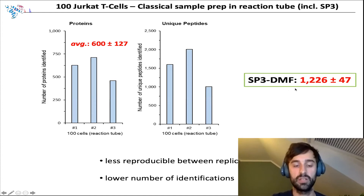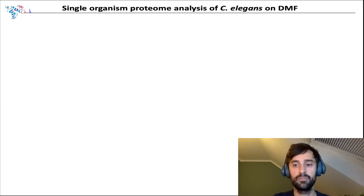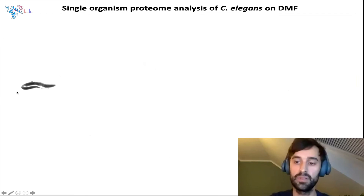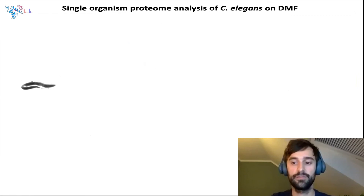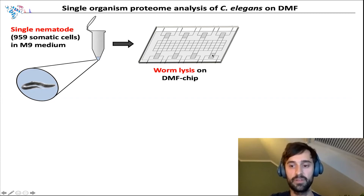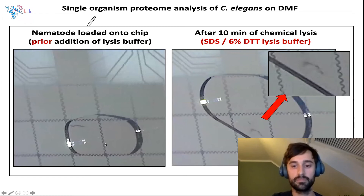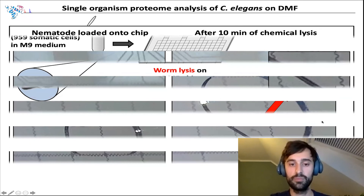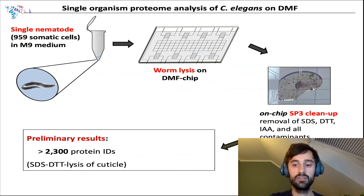You might say Jurkat cells are very easy to lyse, which is true. But I want to present an example where the compatibility of SP3 with various reagents is quite helpful. From our biology department, we very often get samples of the model organism C. elegans. This nematode has been widely studied, and the fascinating thing is that the adult worm has exactly 959 somatic cells — but its cuticle is not very easy to lyse. We loaded singly-picked worms onto the chips via the reservoirs — usually when we load them they stay alive on there. When we added lysis buffer with SDS and a high concentration of DTT to disintegrate the cuticle, after 10 minutes the worm could be seen getting disrupted. Using SP3 and our typical workflow followed by digestion, we also got more than 2,000 protein IDs from a single worm.